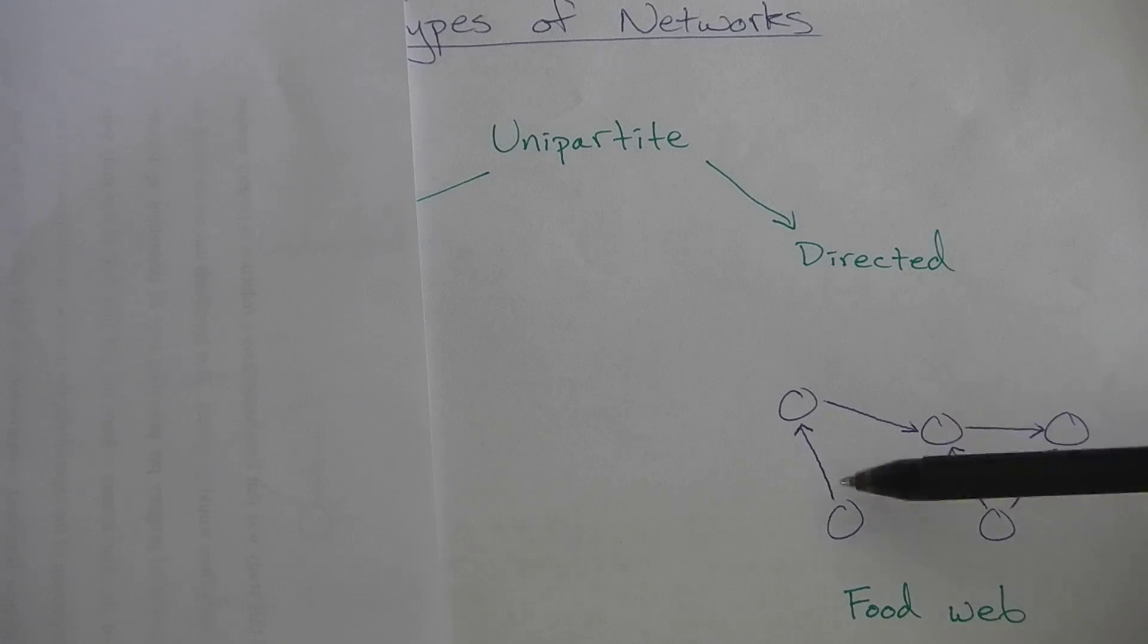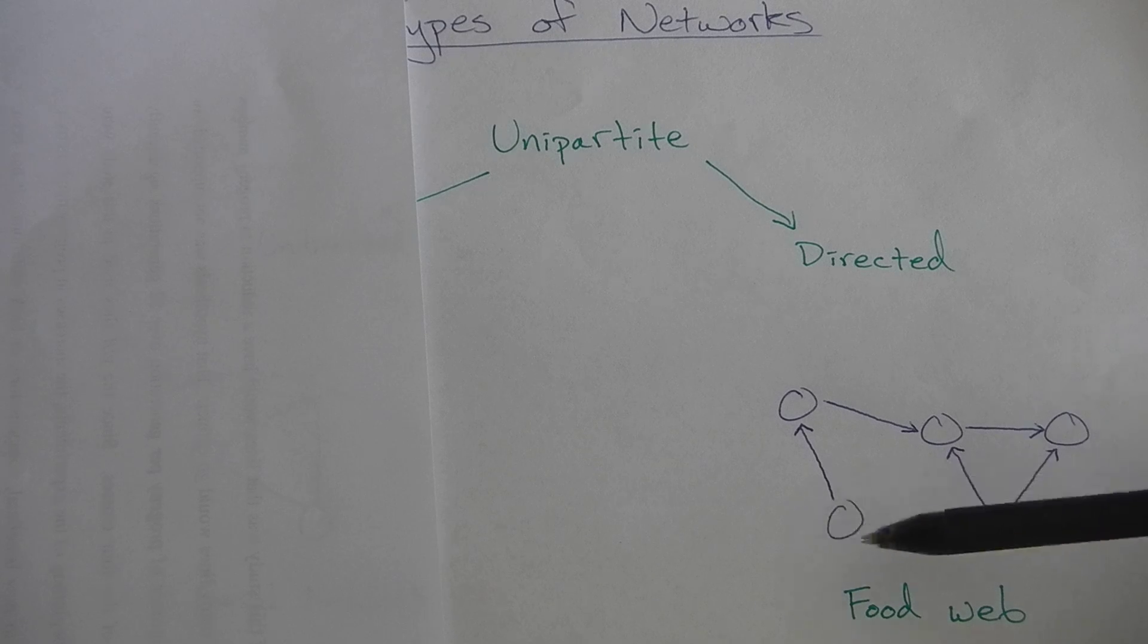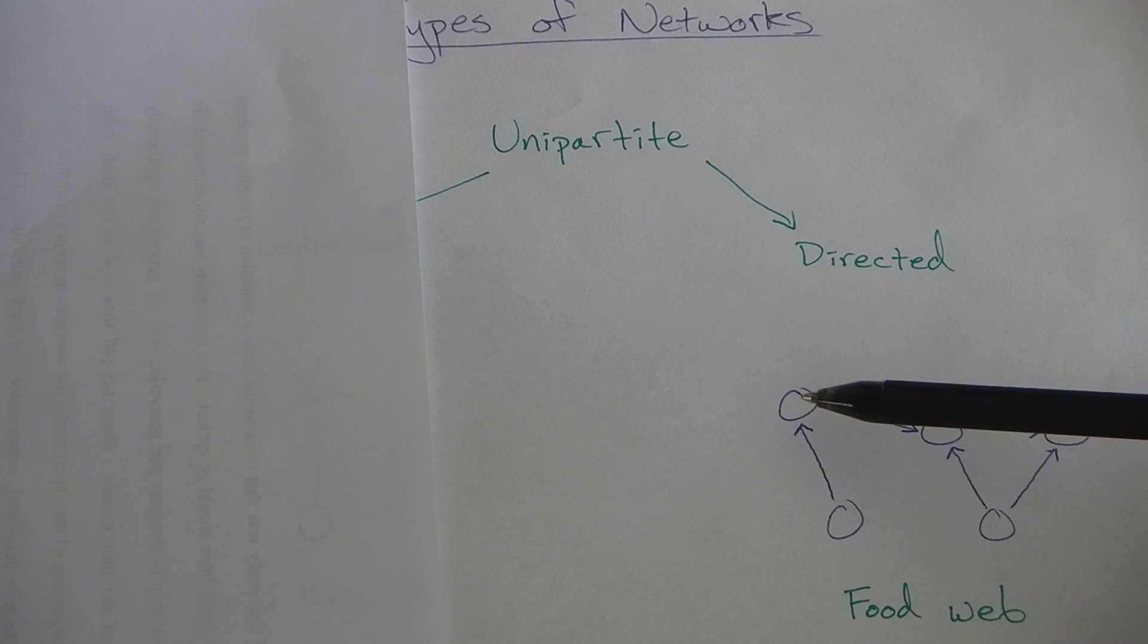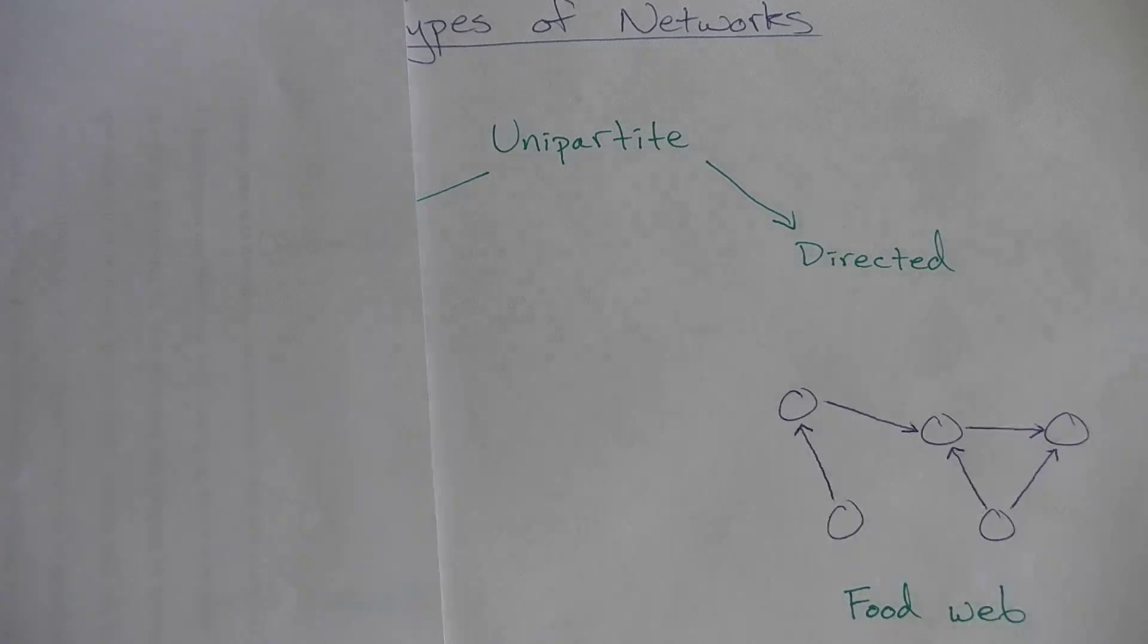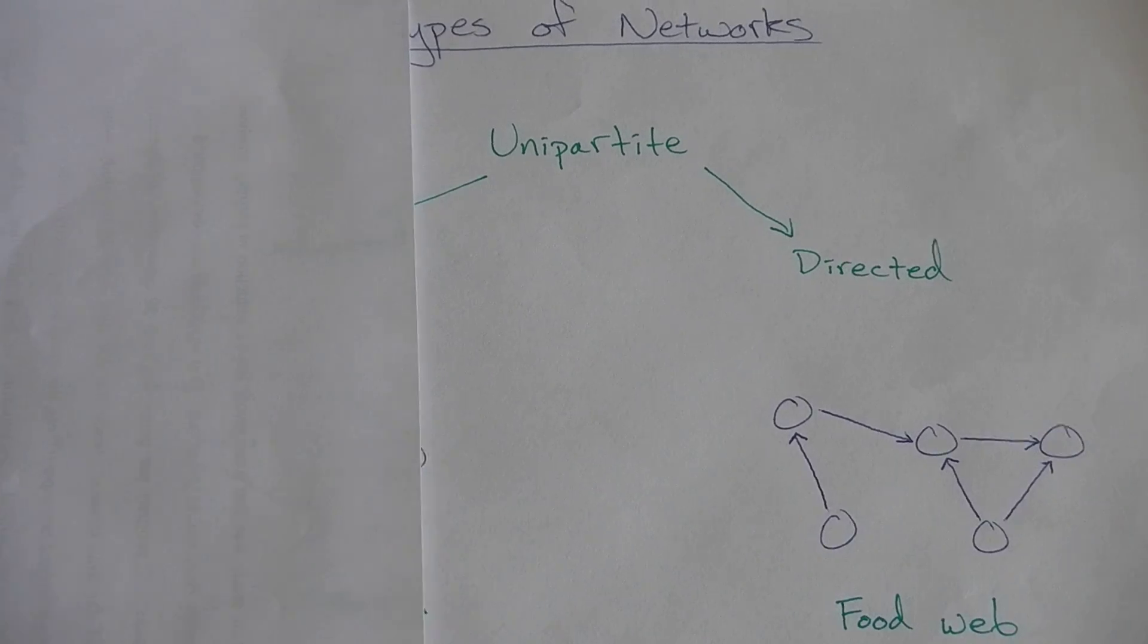So for example, you could think of this path right here as being a food chain where we have a basal plant node going to a herbivore, energy from a herbivore going to a predator, and then to a top predator. So that's a basic example of a directed network.